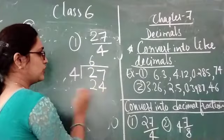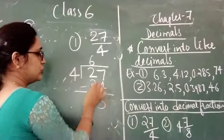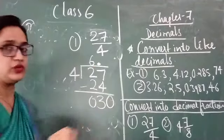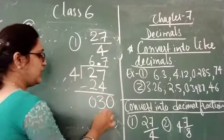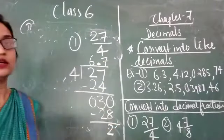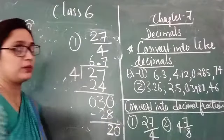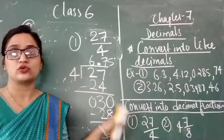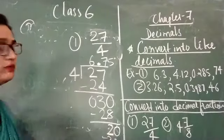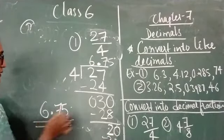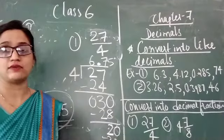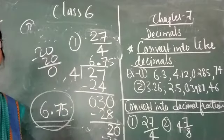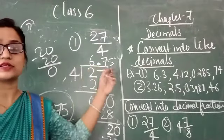4 sixes are 24, remainder is 3. We cannot divide 3 by 4, so let us put a decimal point — 0 comes down, it becomes 30. 4 sevens are 28, 30 minus 28 is 2. It becomes 20. 4 fives are 20, 20 minus 20 is 0. So the quotient we are getting is 6.75. 6.75 is the decimal fraction of 27 upon 4, with 0 remainder left.